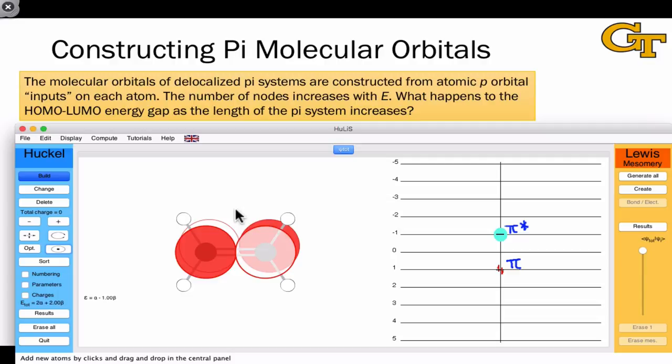In the pi star anti-bonding orbital, we have a destructive interaction between the two lobes, as evidenced by the opposite shading on either side of the molecule.